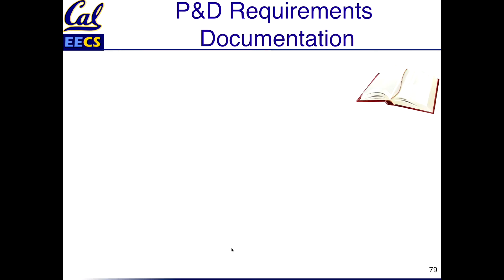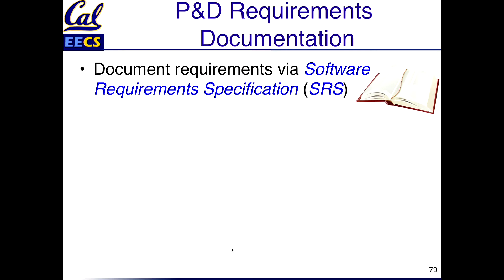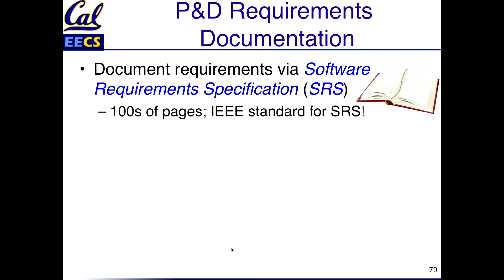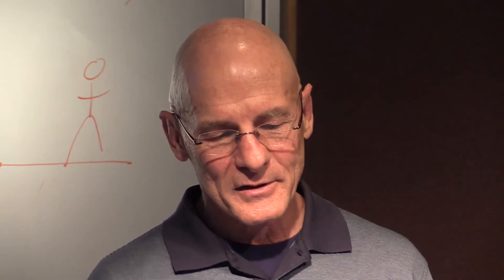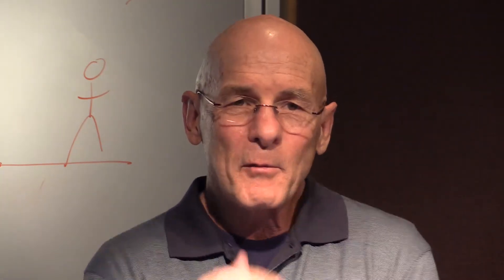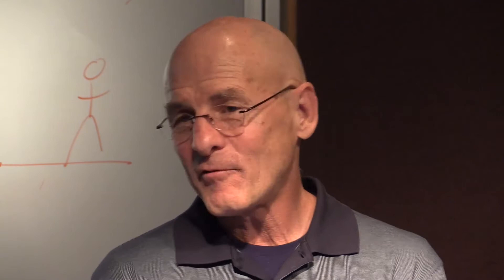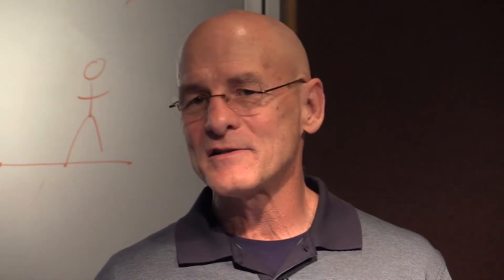After you've elicited the requirements, you do documentation — and this is serious documentation. It's called the SRS, which stands for Software Requirements Specification. These are big — hundreds of pages. There is even an IEEE standard on how to write an SRS, giving you a document that describes a standard about how to build this document. This is inspired by the idea that software doesn't work so we've got to make it like civil engineering — civil engineering has a lot of documents.